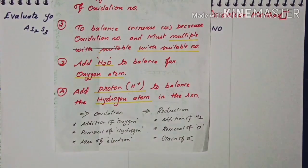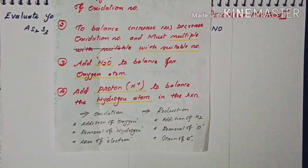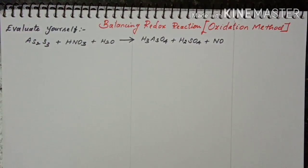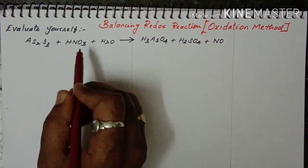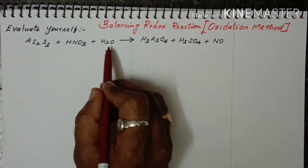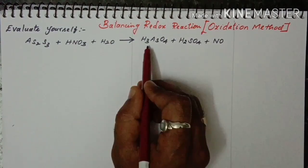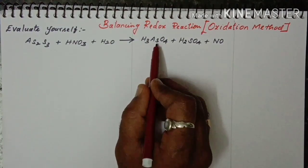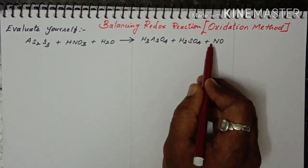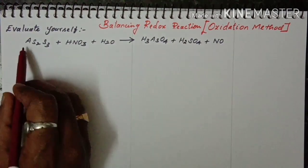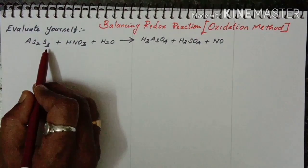Let's evaluate yourself with the problem at the end of the book, page 26. The first reaction is: AS2S3 plus HNO3 plus H2O gives H3AsO4 plus H2SO4 plus NO.